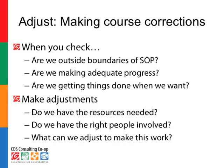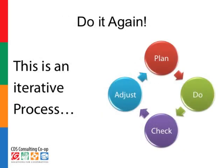Finally, we get to Adjust — making course corrections. When you check, ask yourselves: are we outside the boundaries of our SOP? Are variations happening? Are we making adequate progress with our plans of action? Are we hitting time deadlines? If not, we want to make some adjustments. As a leader, ask: do the teams have the resources they need? Do we have the right people involved? What else can we adjust to make this work? And we have to realize this is not just a one-time thing. Plan, Do, Check, Adjust is an iterative process. We continue to do this as we move throughout the year, implementing our action plans, which ultimately implement our strategy and deliver on the promise of the ends.